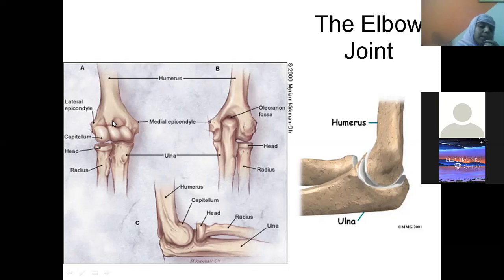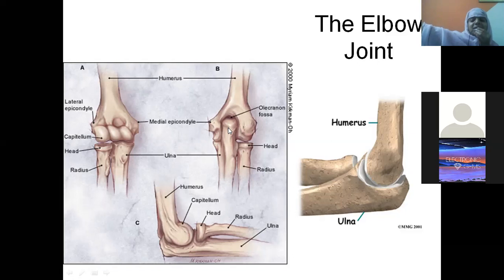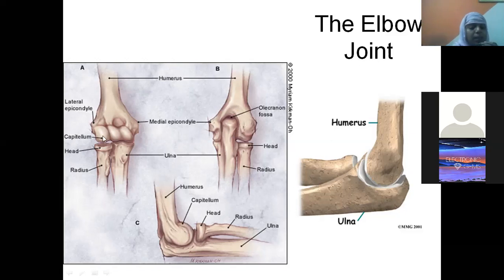These fossae facilitate extreme flexion. In the posterior view, we have the olecranon fossa. The superior projection of the ulna is the olecranon process. During extension of the elbow, the olecranon process of the ulna comes and gets fixed into the olecranon fossa of the lower end of the humerus.